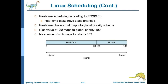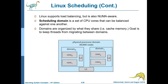Linux real-time scheduling follows POSIX.1b. Real-time tasks have static priorities; nice value of −20 maps to global priority 100 and nice value of +19 maps to global priority 139. Linux supports load balancing and is NUMA-aware. A scheduling domain is a set of CPU cores that can be balanced against one another, organized by what they share such as cache memory. The goal is to keep threads from migrating between domains.